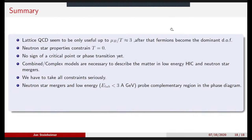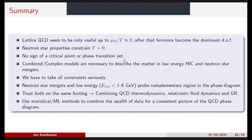To summarize: lattice QCD seems to be useful only up to chemical potentials over temperature of about three — after that, fermions become the dominant degrees of freedom and you have to find other methods. Neutron star properties constrain only T equals zero up to a certain density. We have no sign of a critical point or phase transition yet, either in lattice QCD or experimental data. What we really have to do is combine complex models to describe matter at low-energy heavy-ion collisions and neutron star mergers together, taking all constraints seriously to constrain our equation of state.